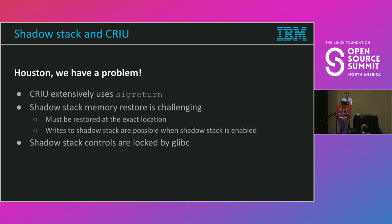I happen to be one of the CRIU co-maintainers and I came to this when somebody on the thread about shadow stack said it would generally break CRIU — and they do. CRIU does really weird things with the programs it tries to checkpoint and restore. We use sigreturn extensively, and we need a way to restore the shadow stack exactly at the same place where it was, because we have to restore the process the same as it was before we checkpointed it.